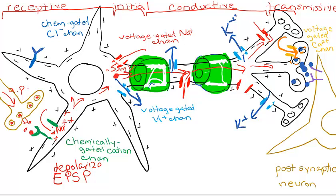So here we have our neuron — this is our full story from start to finish. We get our graded potentials, the EPSP, which triggers at the initial segment an action potential — the sodium channels opening followed by the potassium channels, all the way down until we open our calcium channels at the synaptic knobs, triggering the release of neurotransmitter to diffuse across the cleft to our post-synaptic cell.